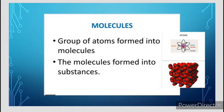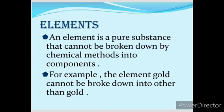So elements - an element is a pure substance that cannot be broken down by chemical methods into components. For example, the element gold cannot be broken down into anything other than gold. Elements consist of only one type of atom. An atom is the smallest particle of an element that still has the same properties.